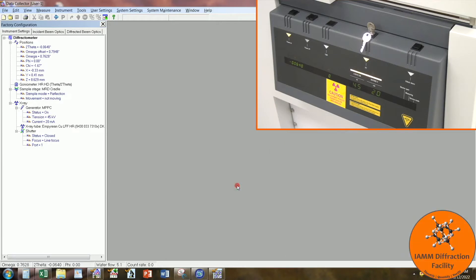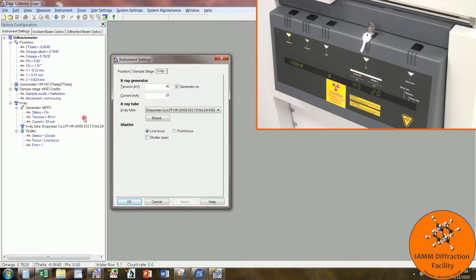This video will focus on the XPERT3 MRD from Malvern Panalytical. In order to switch to point focus, you come in here to instrument settings and you can double click on this. Click on point focus and apply.